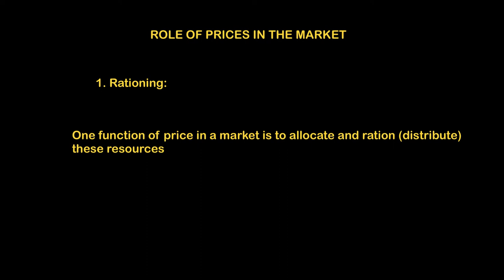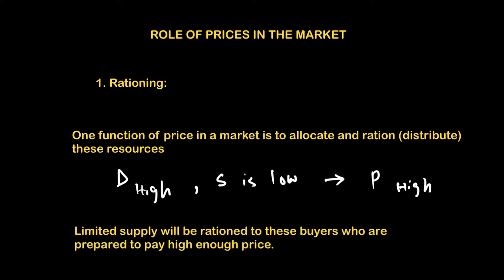Let's say many consumers are demanding a good. If the demand is high and supply is low, the price will be very high because too many people want to buy a good that is not too much in supply. As a result, because the price is too high, only some people will be able to get the good — only those prepared to pay a higher price. So limited supply will be rationed to those buyers who are prepared to pay a high enough price.